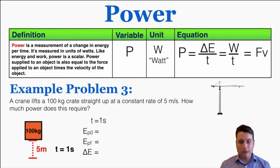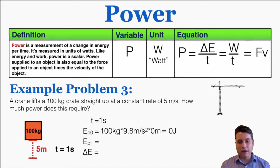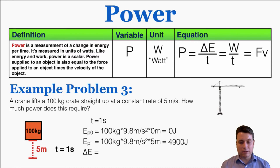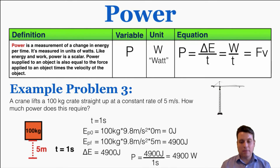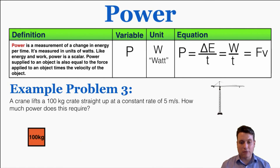The time is one second. The starting potential energy is zero, and the final potential energy is mass times gravity times height: with a height of five meters, that gives 4,900 joules. So the change in energy is 4,900 joules, and power equals 4,900 joules divided by one second, which is 4,900 watts. That's how to solve it with the change in energy over time equation.